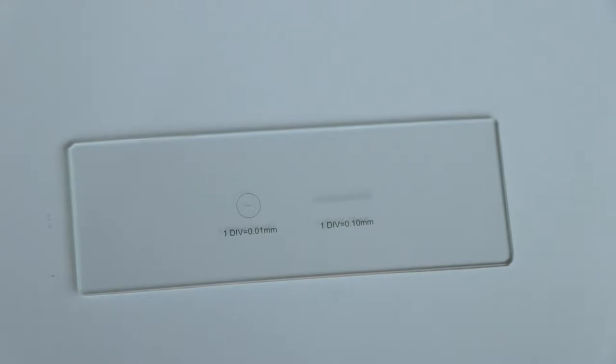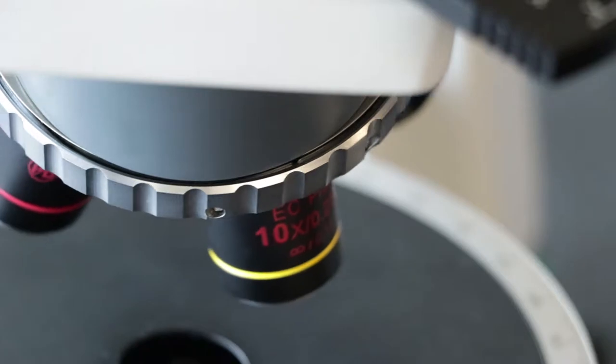The micrometer slide is typically used to calibrate the eyepiece graticule, but we can also use it to measure the width of the field of view for each objective.